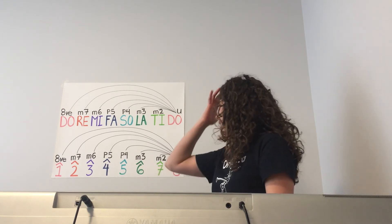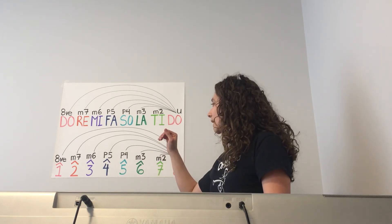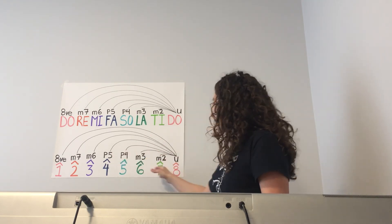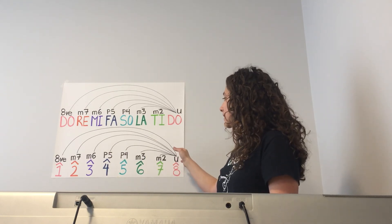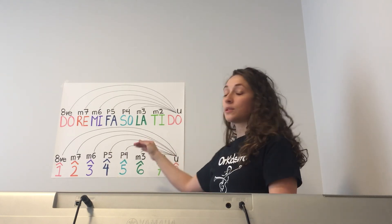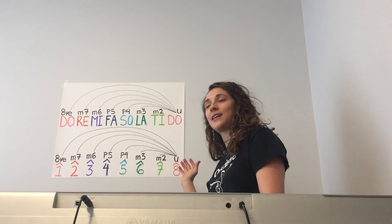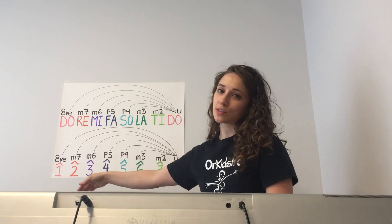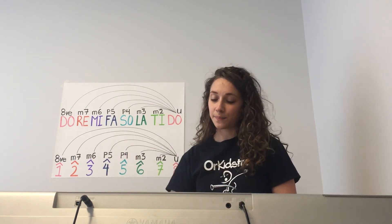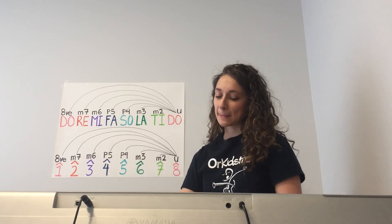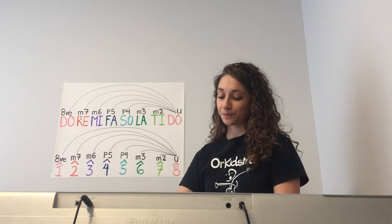Now let's do it with the scale degree numbers, starting with eight. Remember, one and eight are the same note — they're both do — but we'll call the highest do 'eight' so you can easily distinguish which do is which. And we'll say 'set' for seven.